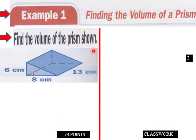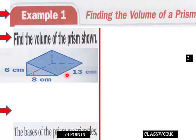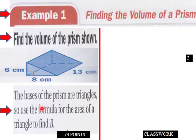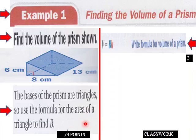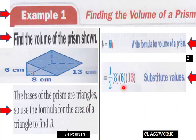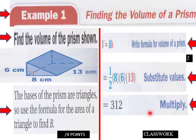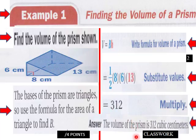Okay, into an example one. Find the volume of this prism here. We have a triangle of a prism here. The base of the prism are triangles. So we have these two triangles here. So we'll use a formula for the area of a triangle to find b. So volume equals b times h. 1 half 8 times 6 times 13. And that's 312 for the area of one of these, for this prism here is the volume. Here's the volume of that prism. So the volume of the prism is 312 cubic centimeters. Using this formula here, volume equals base times height.